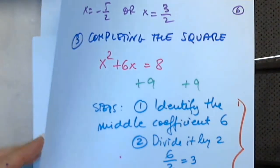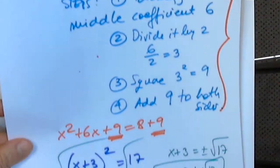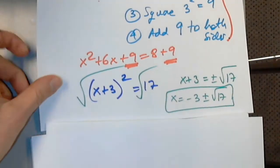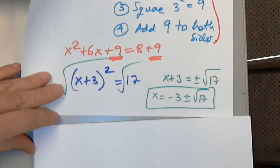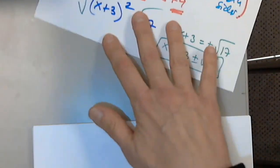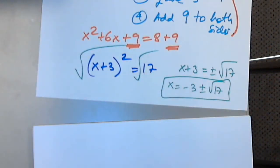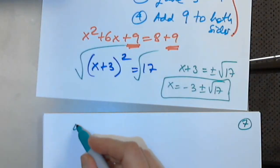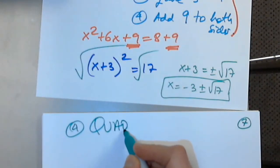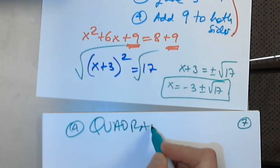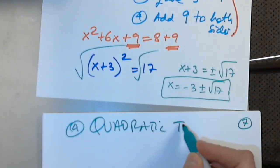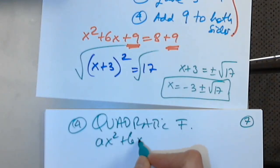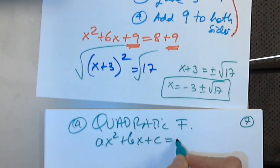The last method is the quadratic formula. In ax squared plus bx plus c equals 0...